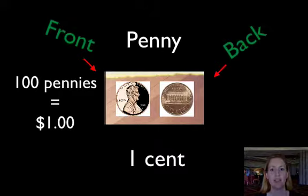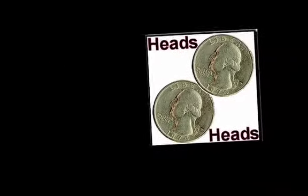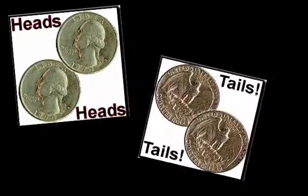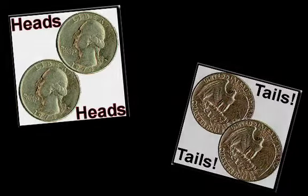The front and the back of coins are also known as heads and tails. The head is the front of the coin and the tail is the back of the coin. Thank you for learning about coins with me today.